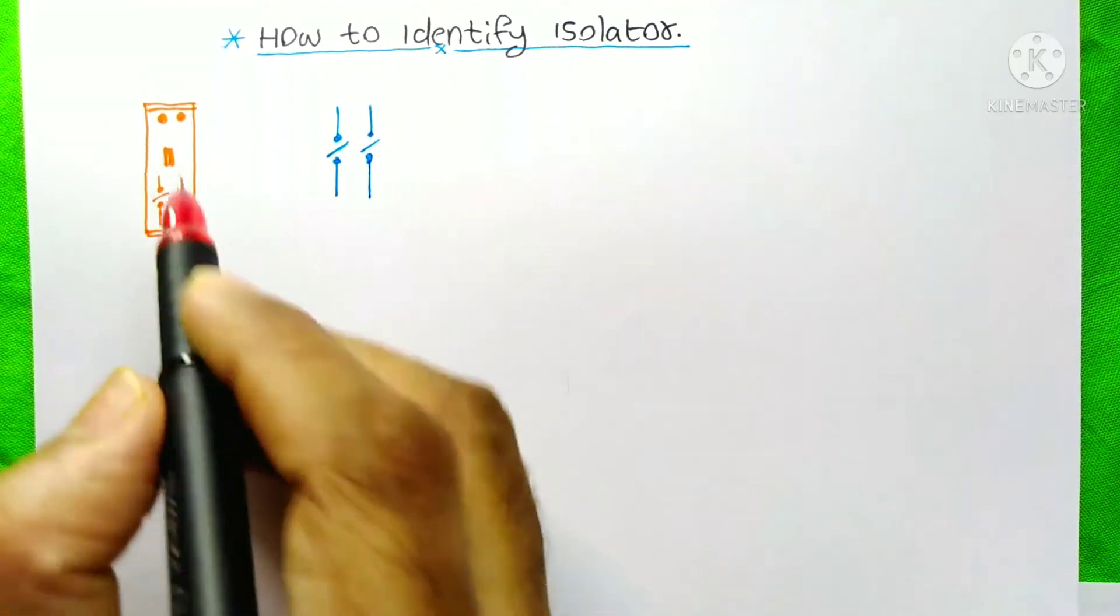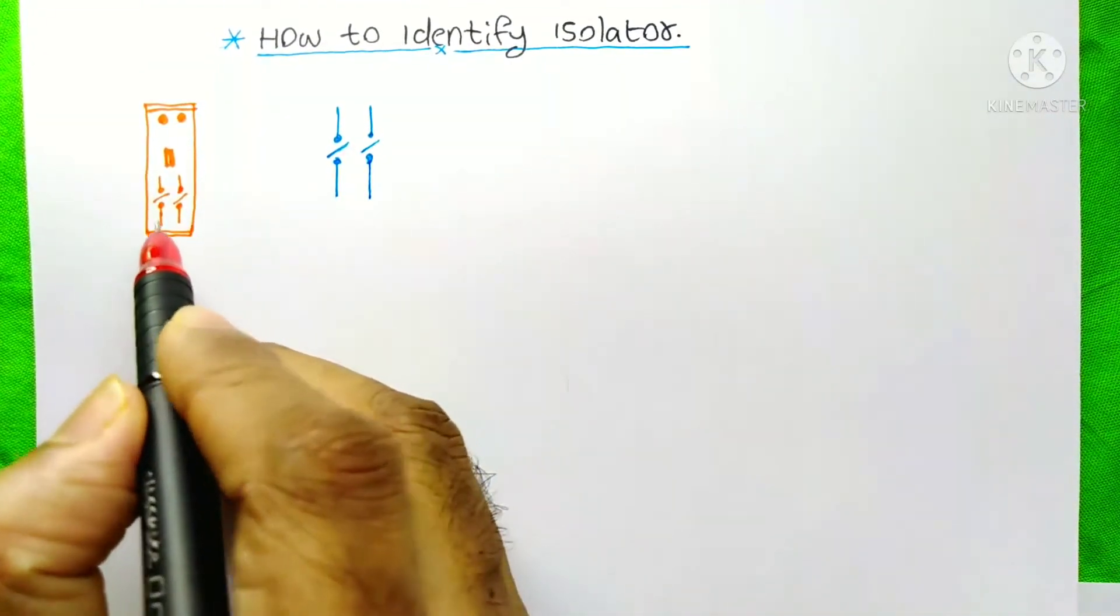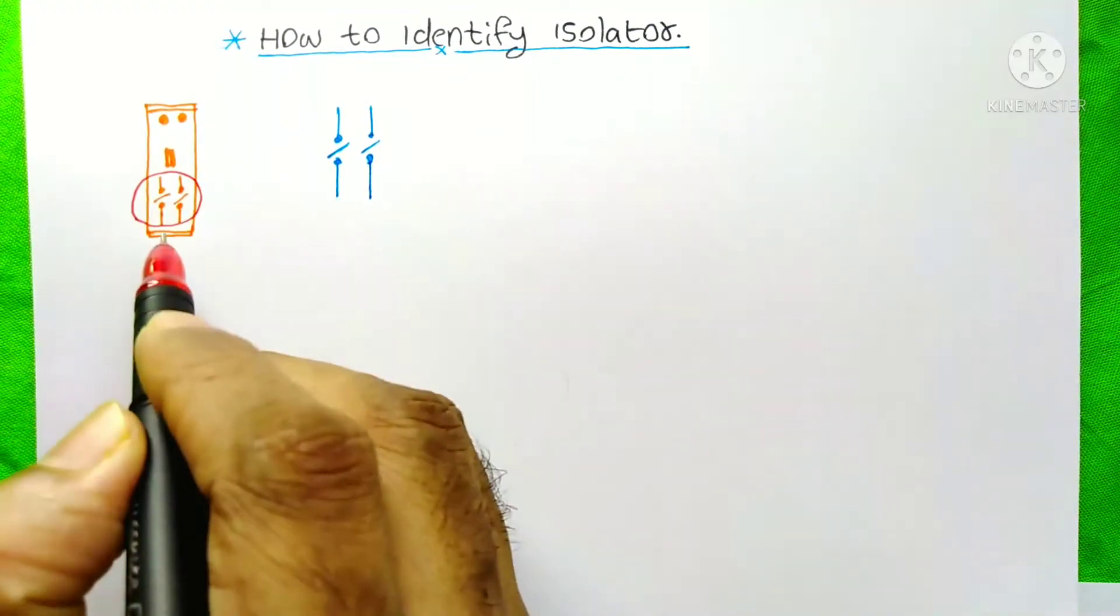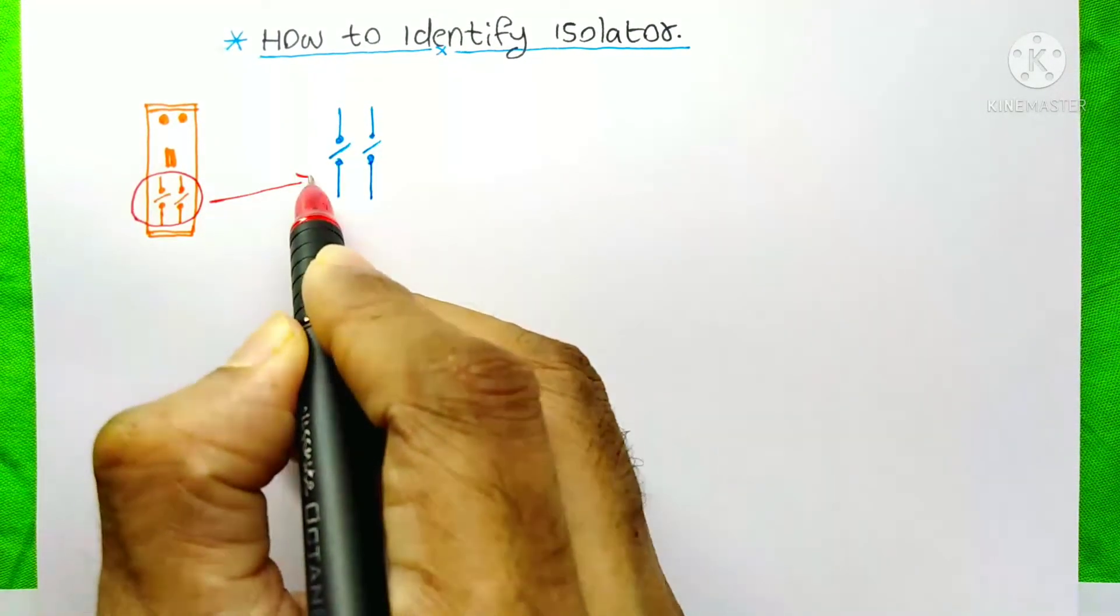Here I just showed you a tuple isolator. On the top of the isolator you can see an indication like this. I just enlarged this thing over here.